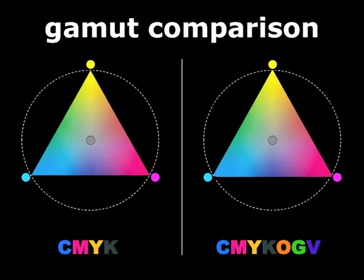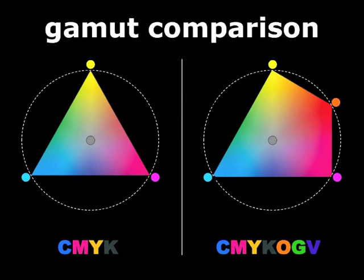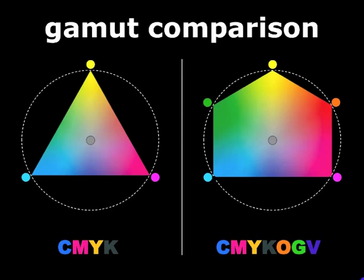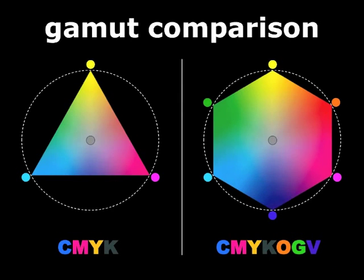With Equinox, any color between yellow and magenta can be added to capture the orange-red area of color space. Any color between yellow and cyan can be added to capture the green area of color space. And any color between cyan and magenta can be added to capture the blue-violet area of color space. The result is a color gamut about 70% larger than CMYK.